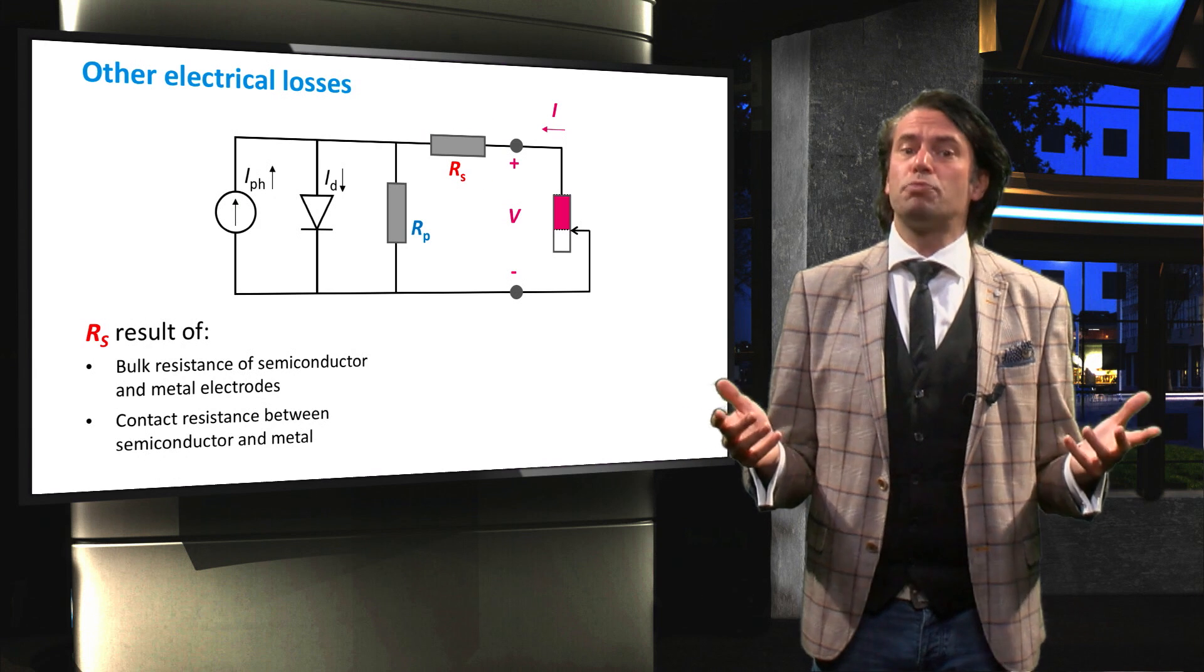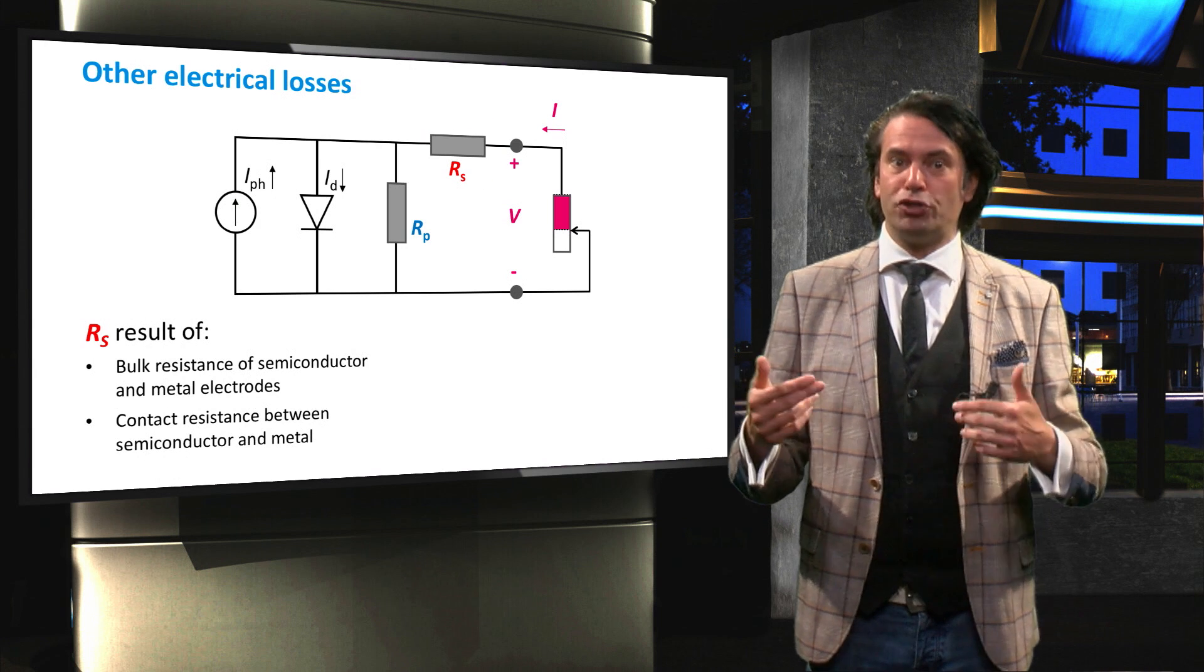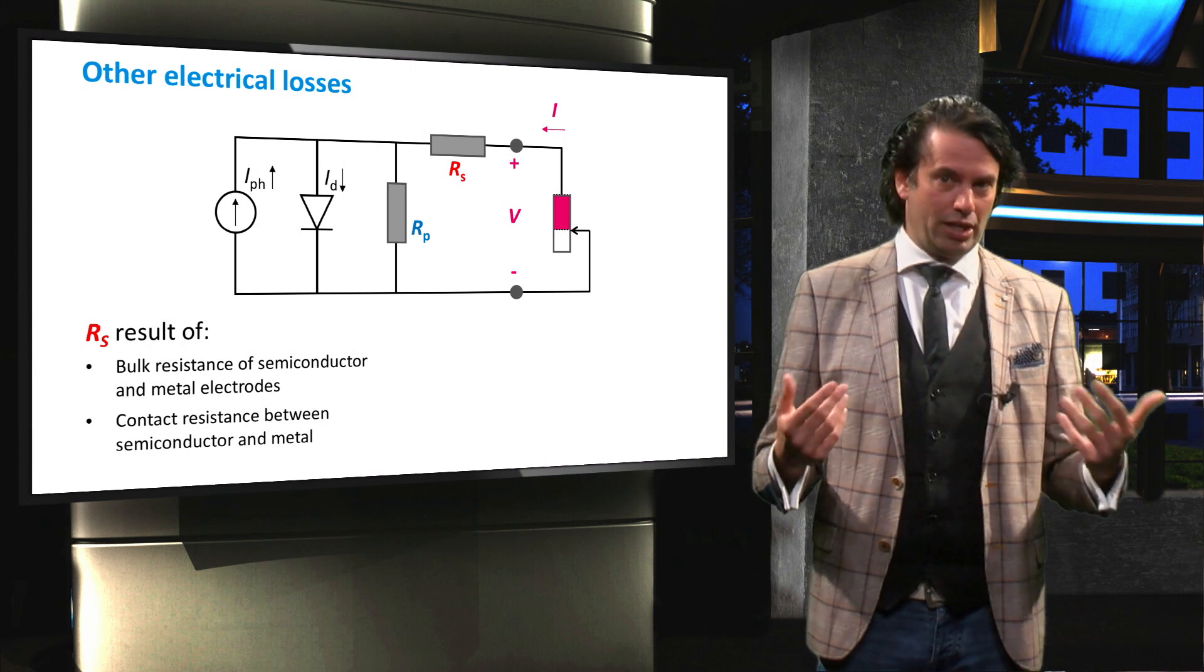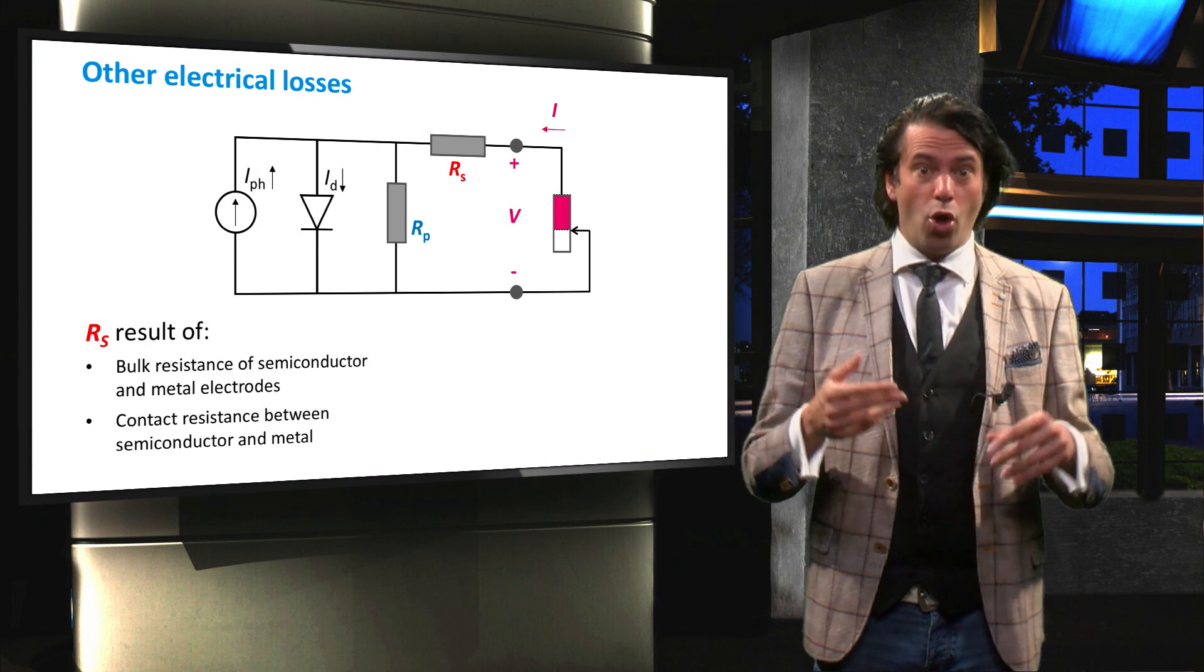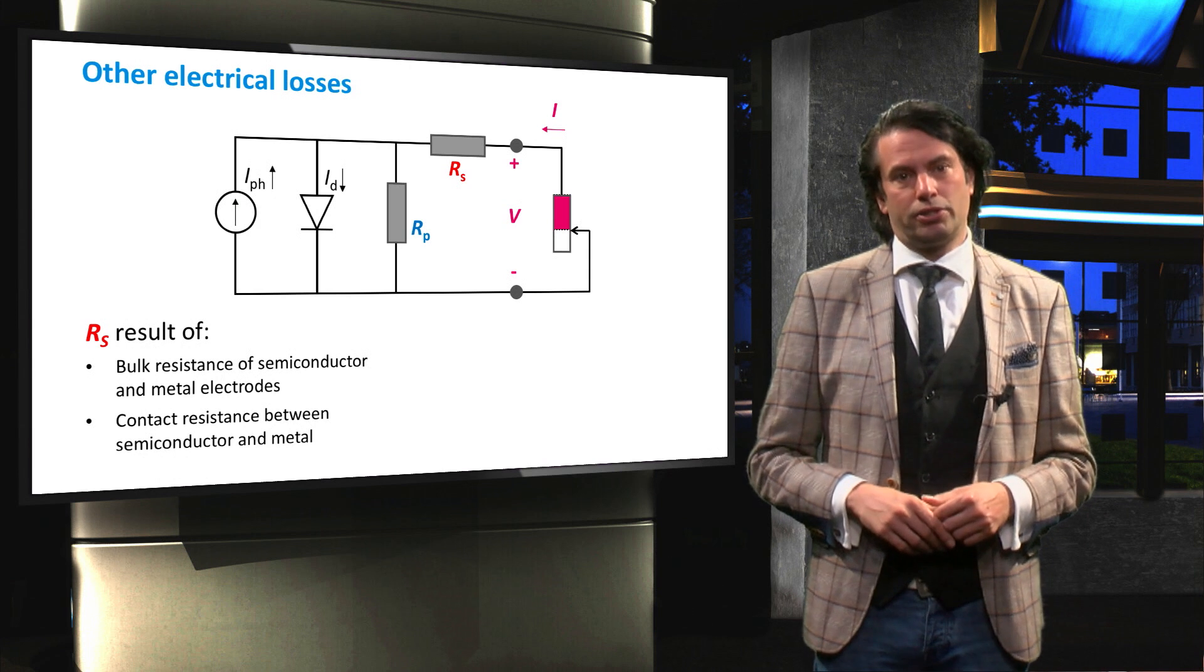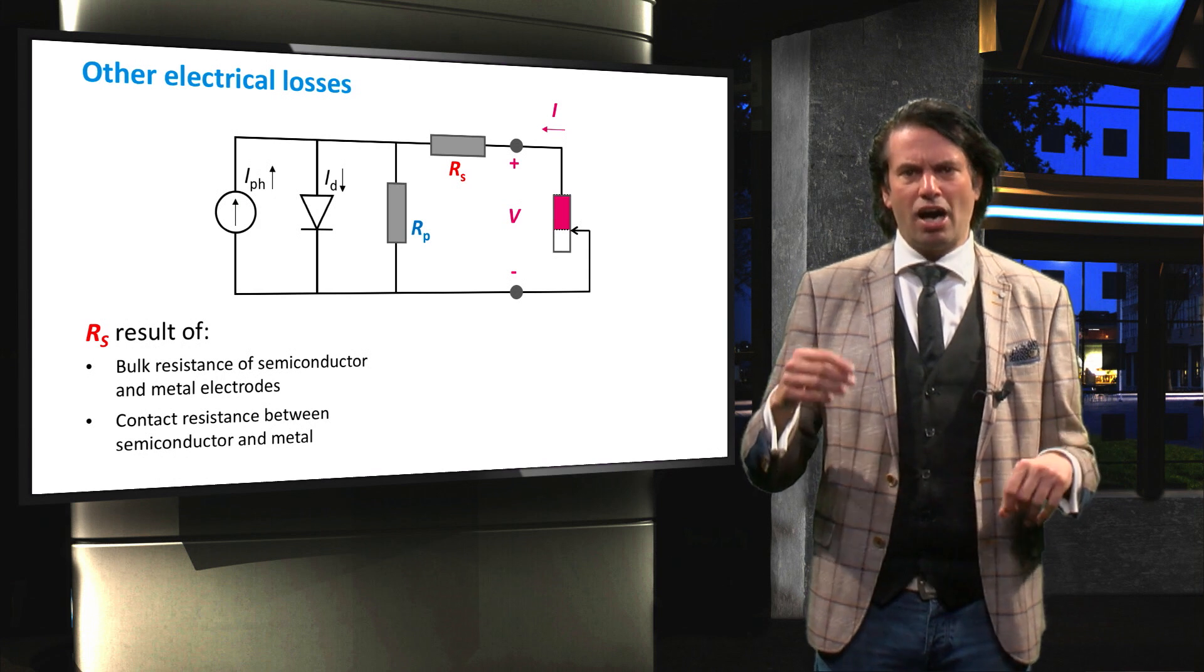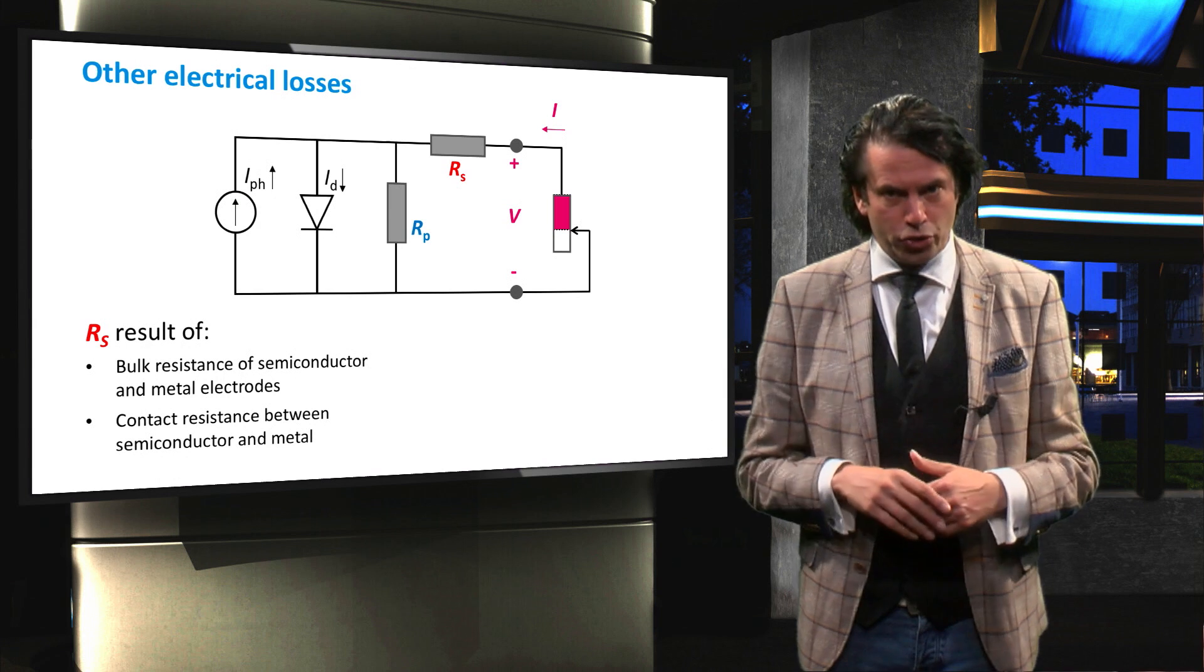The series resistance is caused by bulk resistances of the semiconductor materials and the metal electrodes. The contact resistance between the semiconductor and the metal also influences the series resistance.